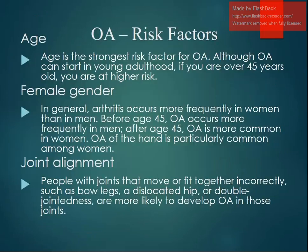The risk factors include age, the strongest risk factor, though it can start in young adulthood. Being over 45 years old places you at higher risk, and women are more affected than men. Joint alignment is also a factor — people with joints that move or fit together incorrectly, such as bow legs, dislocated hips, or hypermobile joints, are more likely to develop wear in those joints.